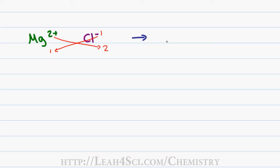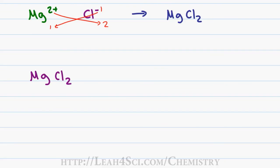This gives me a neutral compound of MgCl2. But if you're given MgCl2, you can also use the crisscross method and reverse it to find the charge of the individual ions.